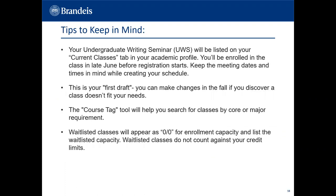Tips to keep in mind when creating your schedules: your undergraduate writing seminar will be listed in your current classes tab in your academic profile, and you will be enrolled in late June before registration starts — keep the meeting dates and times in mind. This is your first draft; you can make changes in the fall if a class does not fit your needs. The course tag tool will help you search for classes by core or major requirement. Waitlisted classes will appear as 00 for enrollment capacity and list the waitlisted capacity; they do not count against your credit limits.